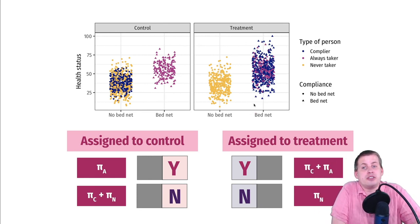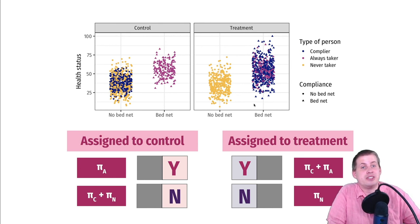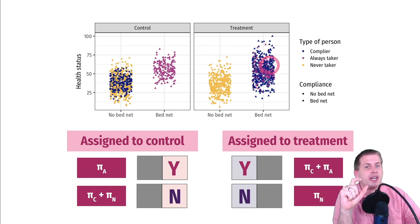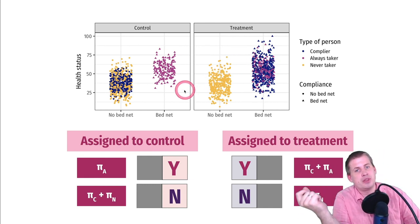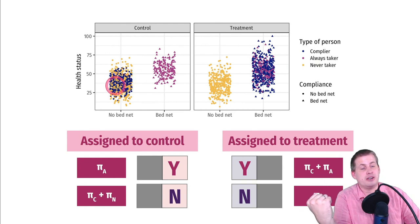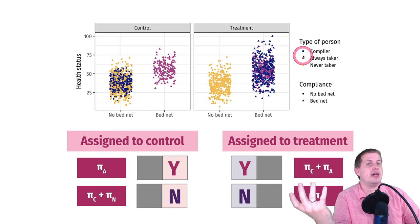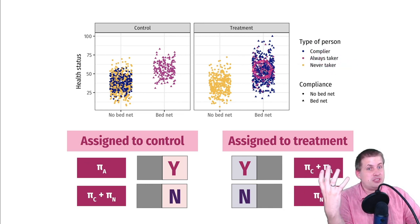Mathematically, the complier average treatment effect is just the average treatment outcome minus the average control outcome for just the compliers. We need the average for the dark purple dots in treatment minus the dark purple dots in control. That's the complier average causal effect — but we need some disentangling to get there.